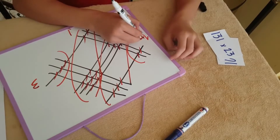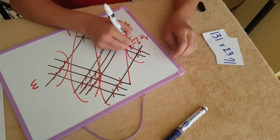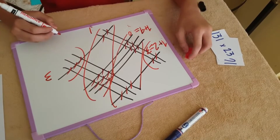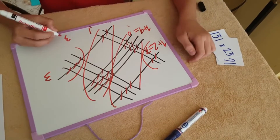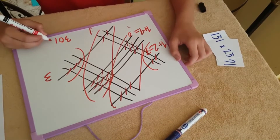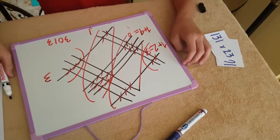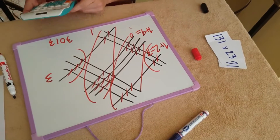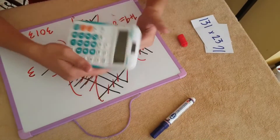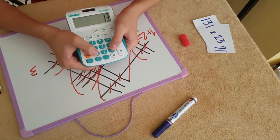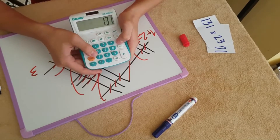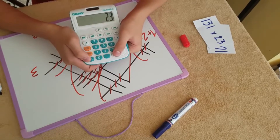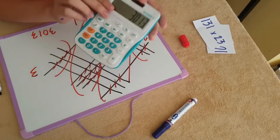In the next zone: 1, 2. 1 plus 2 equals 3. So the answer to 131 times 23 is 3, 0, 1, 3 — three thousand and thirteen. Let's calculate that: 131 times 23 equals 3,013. My exact answer.